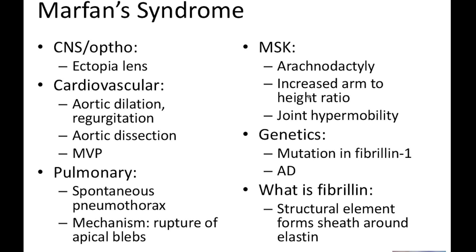From a pulmonary standpoint, because these patients are going to be tall and slender, they are at risk for spontaneous pneumothoraces. Remember that a pneumothorax is going to be described on your exam as an acute onset of shortness of breath. Maybe their pulse oximetry is going to be low. They're going to have a tracheal deviation towards the side of the lesion if it's a spontaneous pneumothorax, and the mechanism is going to be a rupture of apical blebs — very important to know because connective tissue is messed up.